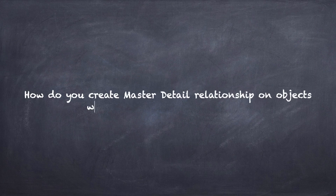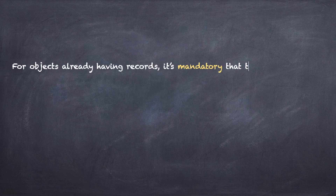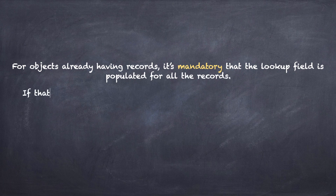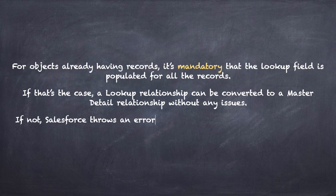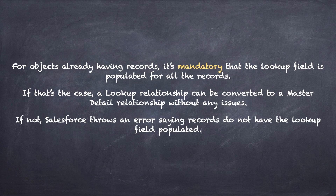How do you create a master detail relationship on objects where we already have records? For objects already having records, it's mandatory that the lookup field is populated for all the records. If that's the case, a lookup relationship can be converted to a master detail relationship without any issues. If not, Salesforce throws an error saying records do not have the lookup field populated.